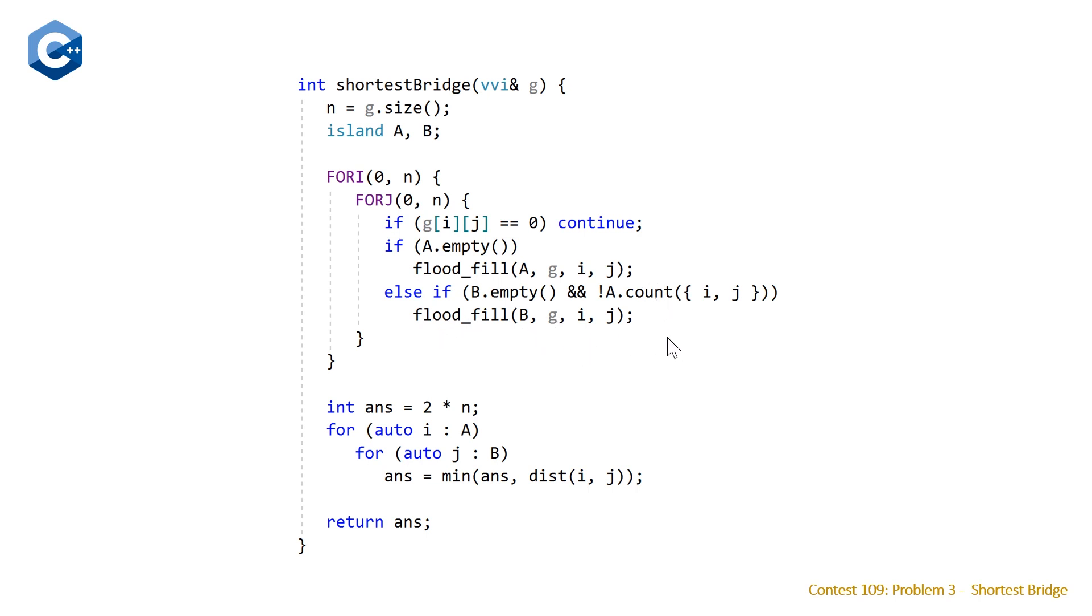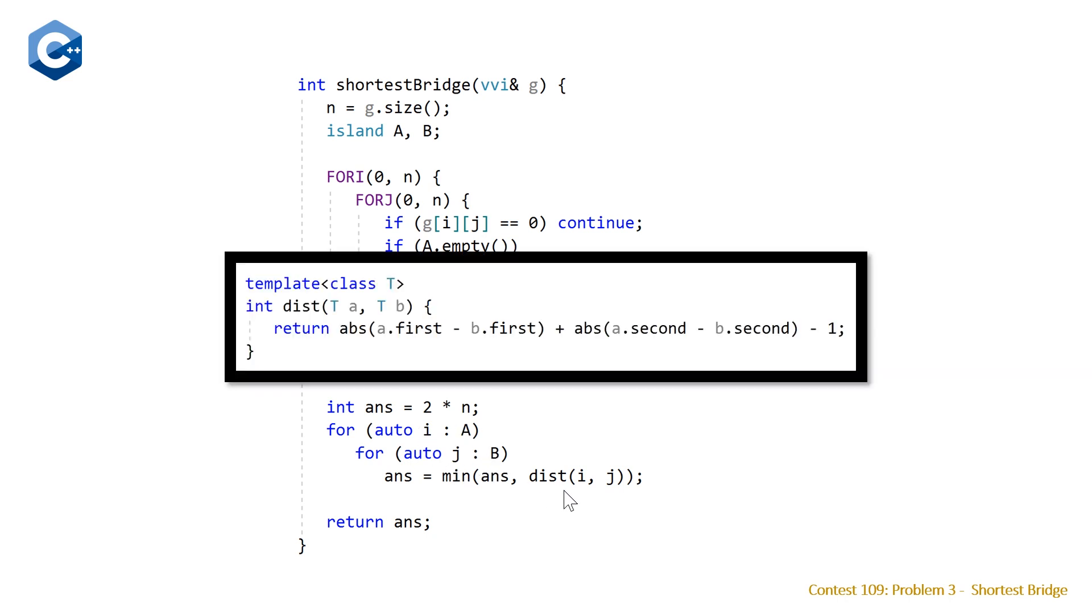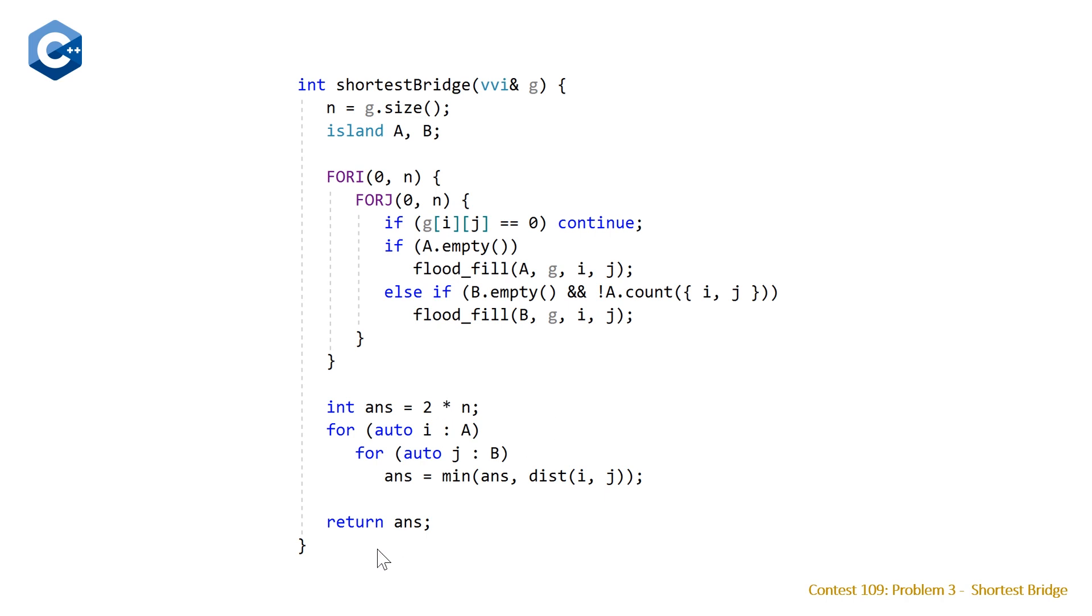We'll take a look at our flood fill algorithm in a second. Once we've done that, we just need to initialize our answer. You can initialize it to 2 times n, which we know is going to be the worst case, because that's just basically the width plus the height. Then we have our nested for loop where basically we calculate the distance between every single one of the pairs in A and B. Note that this distance formula is simply this: absolute value of the difference of the firsts and the difference of the seconds minus one. Once we've calculated this, we just return our answer.